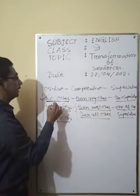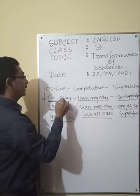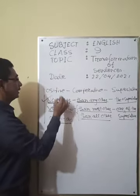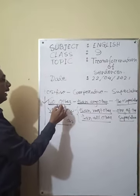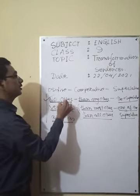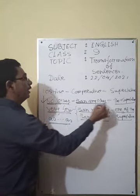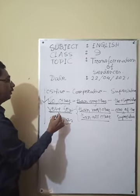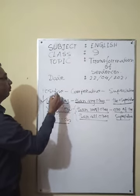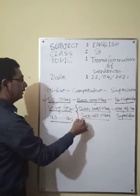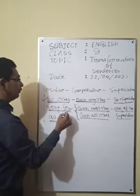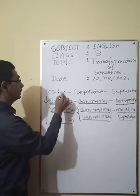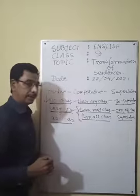If you go to a sentence with 'no other' — a positive sentence — and you have to change it from positive to comparative, you have to add 'than any other.' If you want to change the sentence from positive to superlative, you have to add 'the' plus superlative. If you find 'very few,' change positive to comparative by adding 'than most other' or 'than all other.' And to change from positive to superlative, use 'one of the' plus superlative.